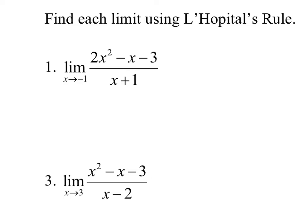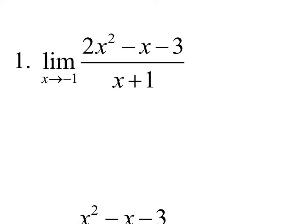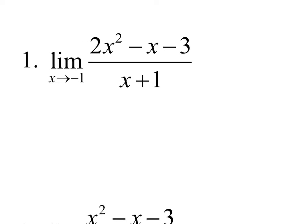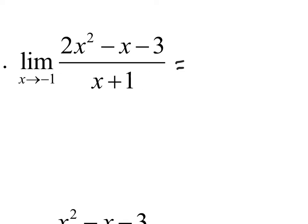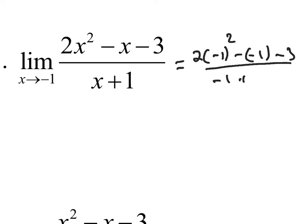So we've got a limit here. In the old days, what's the first technique we used to solve a limit? The very first method we learned is plug in and do it — substitution. That would be 2 times negative 1 squared minus negative 1 minus 3, over negative 1 plus 1.